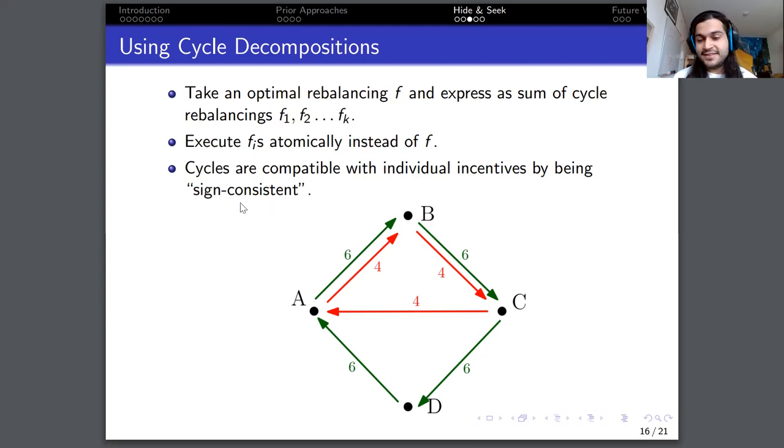And what I mean by that can be seen in this graph. Here we have a certain rebalancing, which can be written as two cycle flows, let's say the green cycle and the red one. And notice that whenever these two cycles are adjacent, meaning when they both go through the same edge, for instance, the edge from A to B, they are going in the same direction. So they are consistent in their signs.